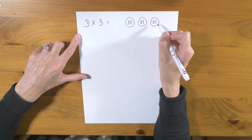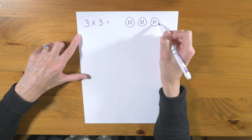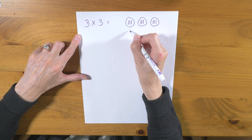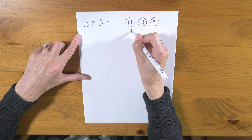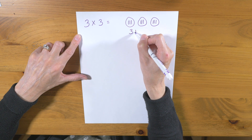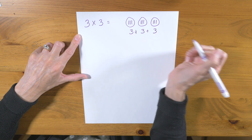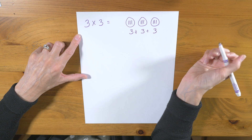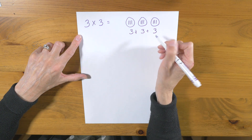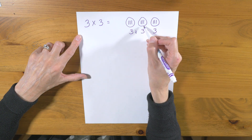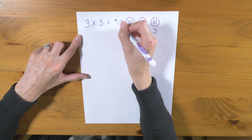We have to count up what's inside those groups. So it's really 3 plus 3 plus 3. And our answer is 3, 6, 9.